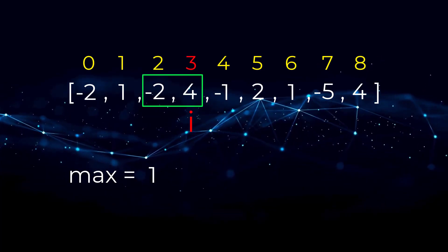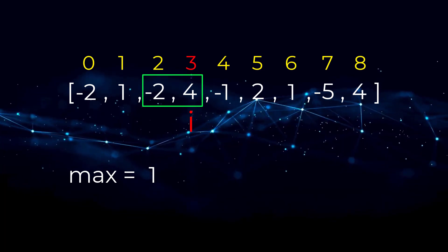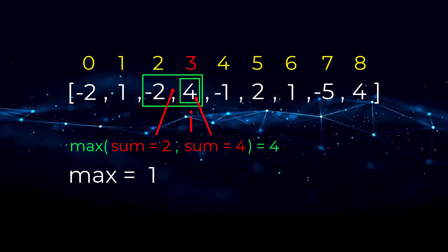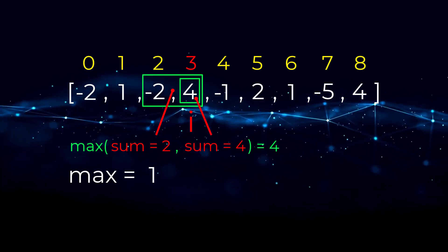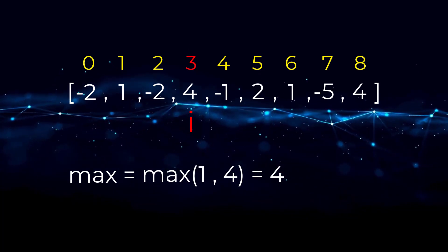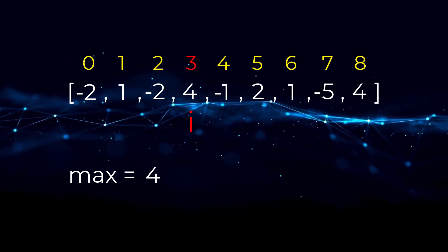We move our pointer to four. Four plus the previous subarray sum would be four plus negative two, which equals two. We are comparing the four subarray with this subarray here, but the four subarray on its own is greater. Now we compute our max again. Four is greater than one, so our new max becomes four. Maybe you already figured this out.